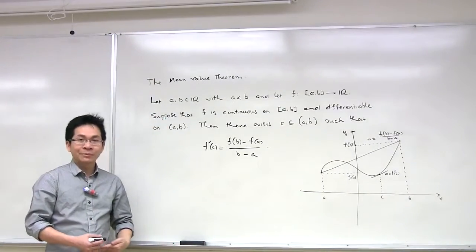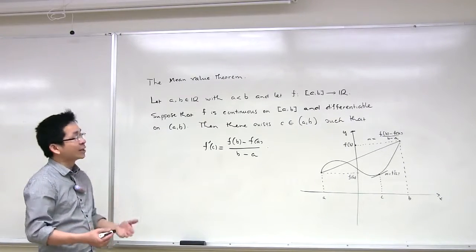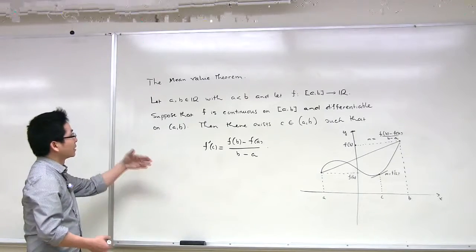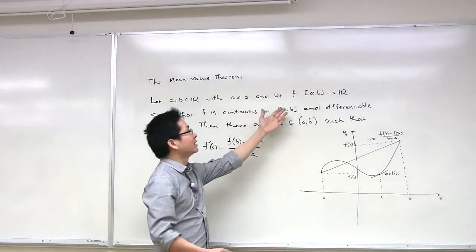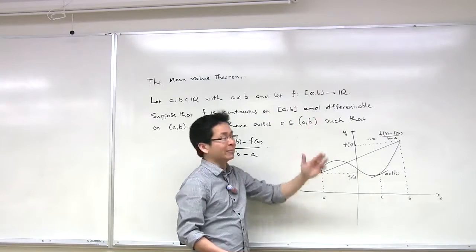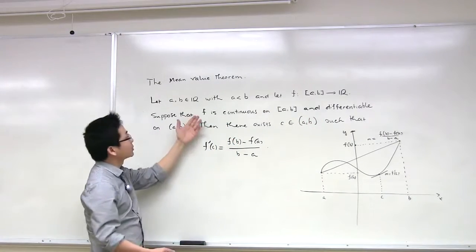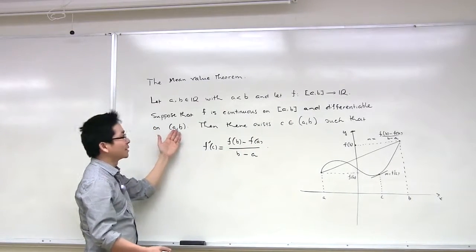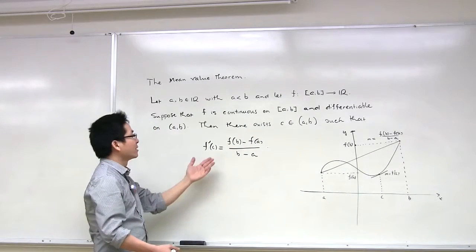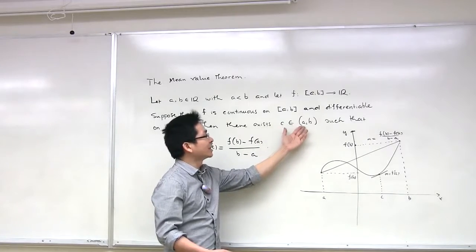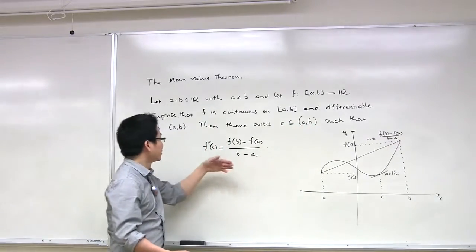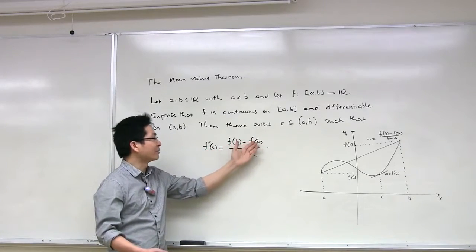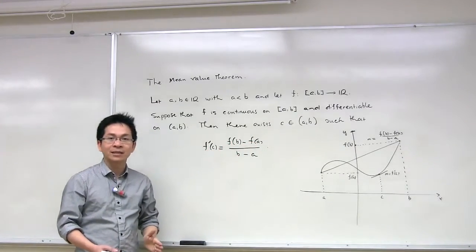Before solving the problem, let me recall the mean value theorem. This is one of the most important theorems of mathematical analysis. We consider a function f defined on an interval [a, b], and we suppose that f is continuous on the closed interval [a, b] and differentiable on the open interval (a, b). Then there exists some c in the open interval (a, b) such that the derivative of f at c is equal to f(b) minus f(a) over b minus a.